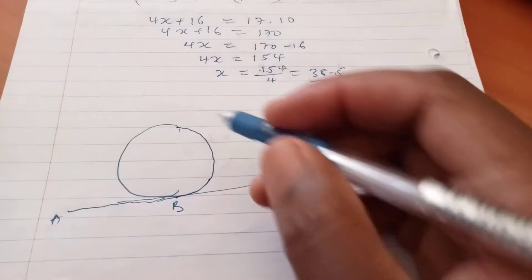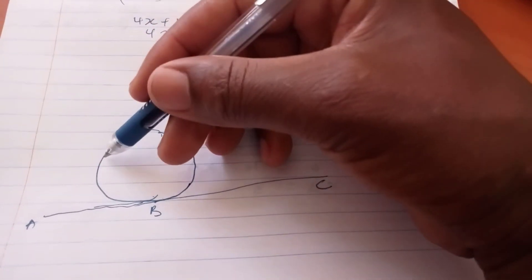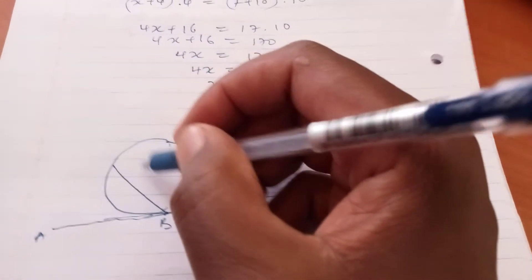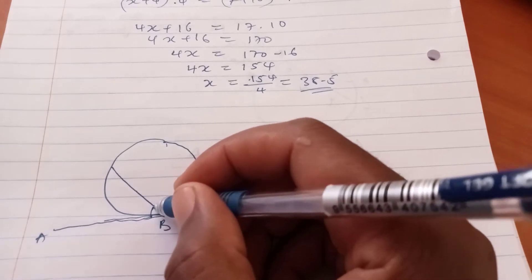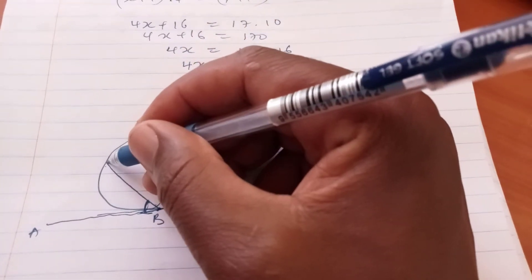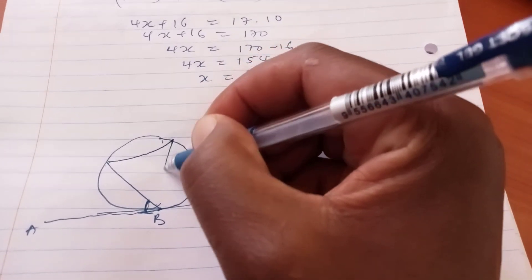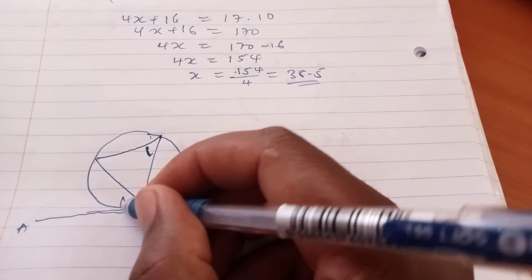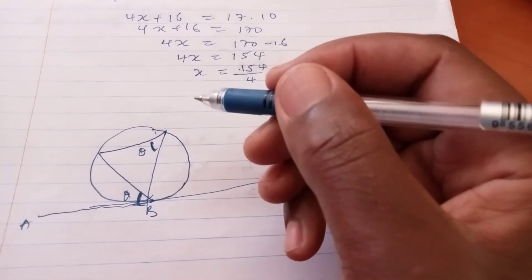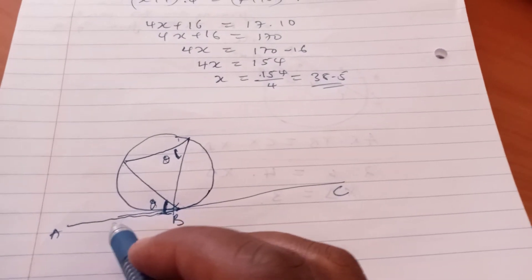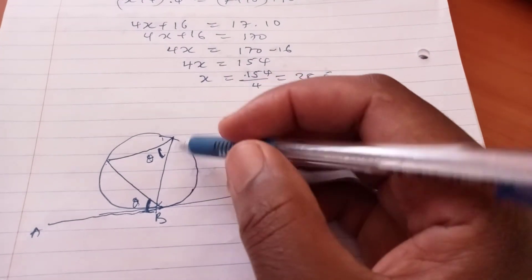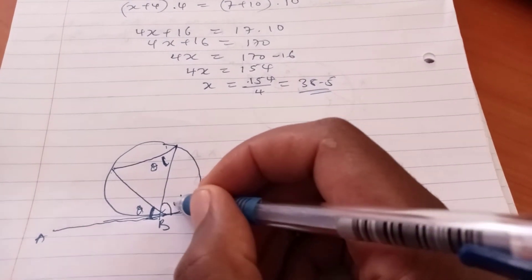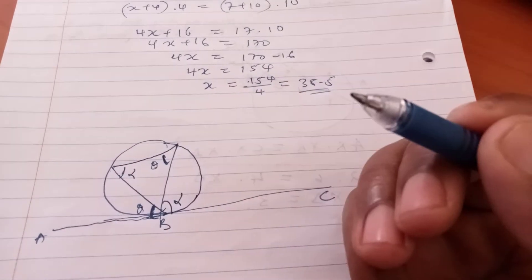So if you draw a chord, I want to show you the behavior of a chord versus a tangent. If you draw a chord, the angle that this chord makes with a tangent is the same angle subtended by the same chord at the circumference. So if this is alpha, also this one is alpha. Very interesting.